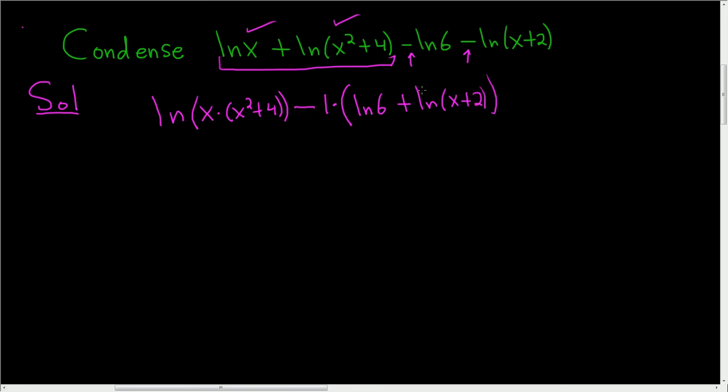And let's check that. If you multiply negative 1 and positive natural log of x plus 2, you get a negative, right? Negative and positive is negative. So things look okay.